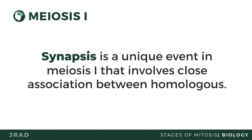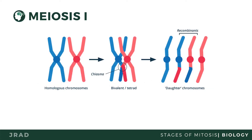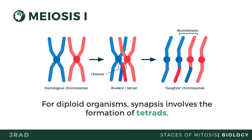After synapsis, crossing over occurs. This is where homologous chromosomes exchange material with one another. In this picture you can see the duplicated chromosomes of the parent. Synapsis causes the formation of a tetrad, or four sister chromatids in the set. After crossing over, you can see that homologous chromosomes change parts.